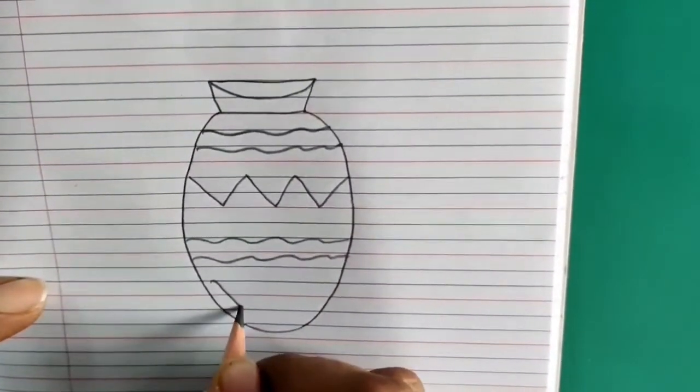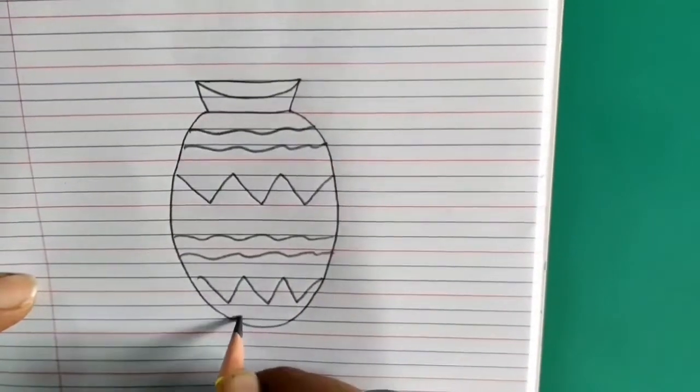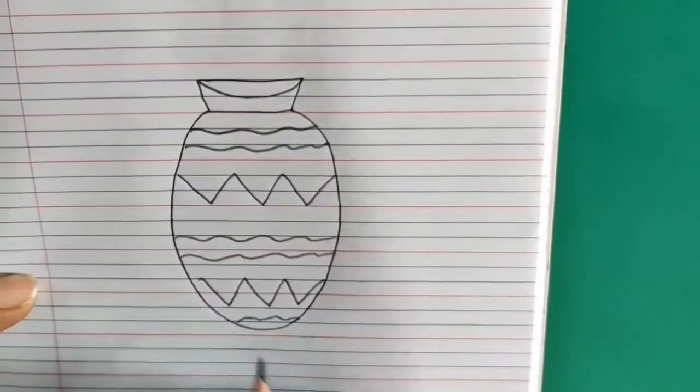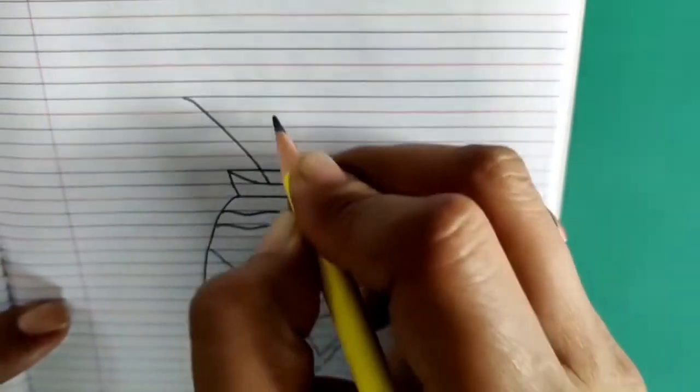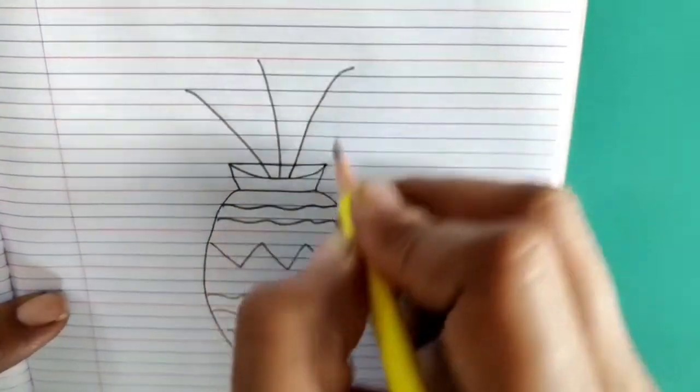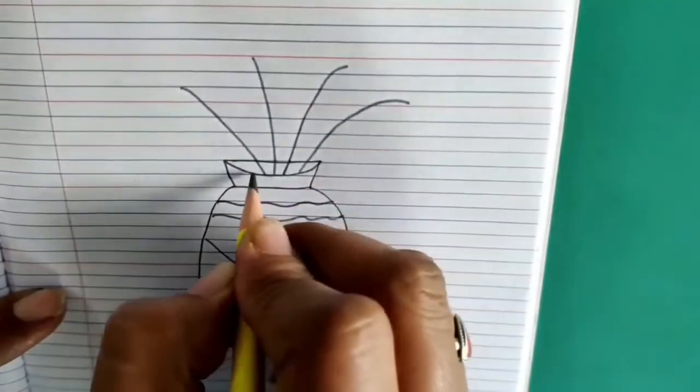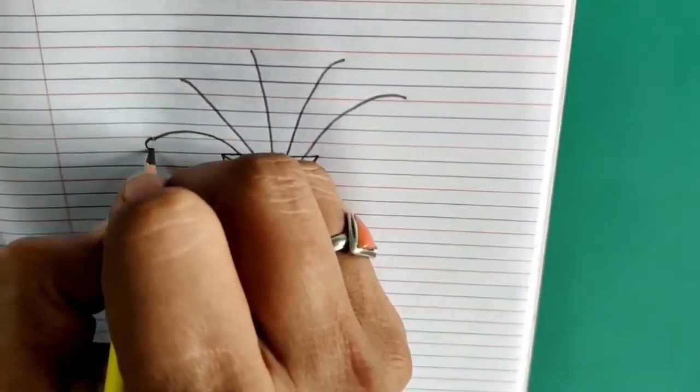Then draw slanting lines and curved lines. Now from here draw slanting lines. This way. And from here we will draw flowers.